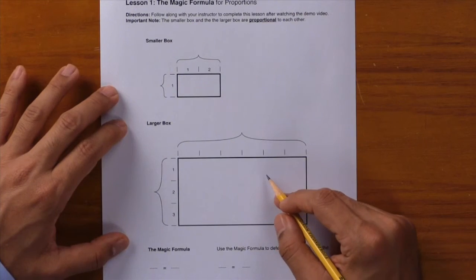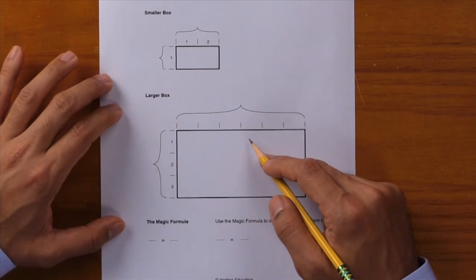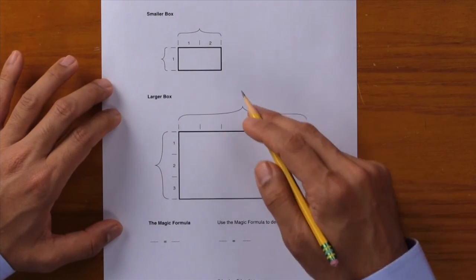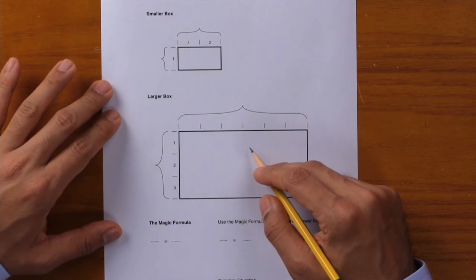That's how proportions are so helpful. If you have partial information about a problem, you can use what you know about the relationships to figure out the missing information. Let's learn how to do that. Here's lesson one: the magic formula for proportions. We have a smaller box and a larger box. These represent the smaller photo and the larger photo from the demo. Keep in mind these two boxes are proportional to each other.